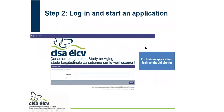Once you have your login credentials, you need to log in and start an application. This is how the Magnolia web page looks like. You need to enter your username and password and start your application. For trainee applications, it should be the trainee who signs in.